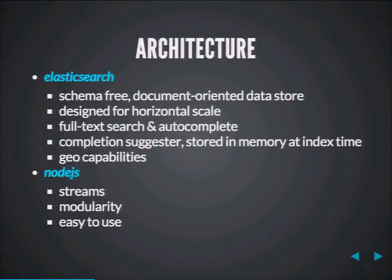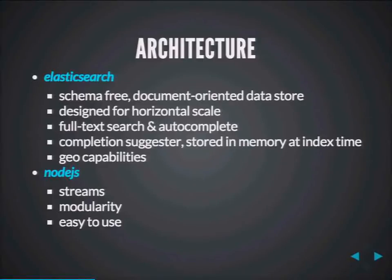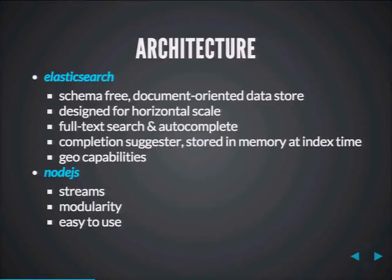We chose Elasticsearch because it's a schema-free, document-oriented data store. We built Pellius to be data agnostic — we don't know what kind of information a dataset could have. Some might have population, some popularity, some street intersections, some might not. Elasticsearch gives us the flexibility to throw any kind of documents at it. It's also designed for horizontal scale, which is great for a global geocoder since you often run into scaling issues — nodes, shards, replications, and replicas all come out of the box.